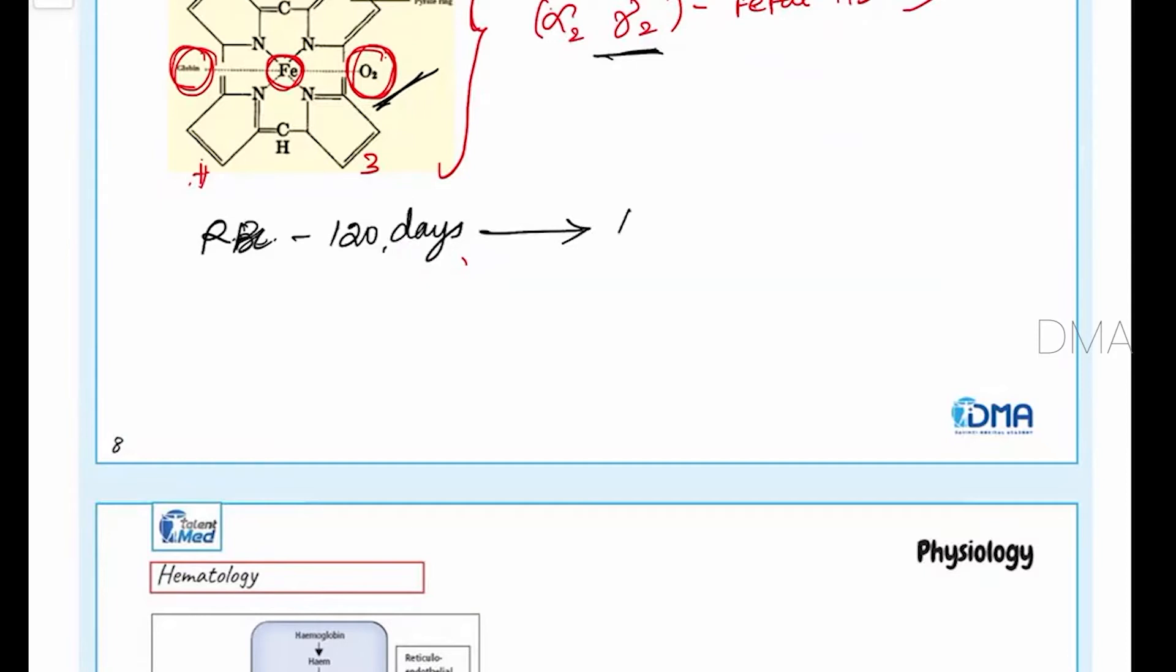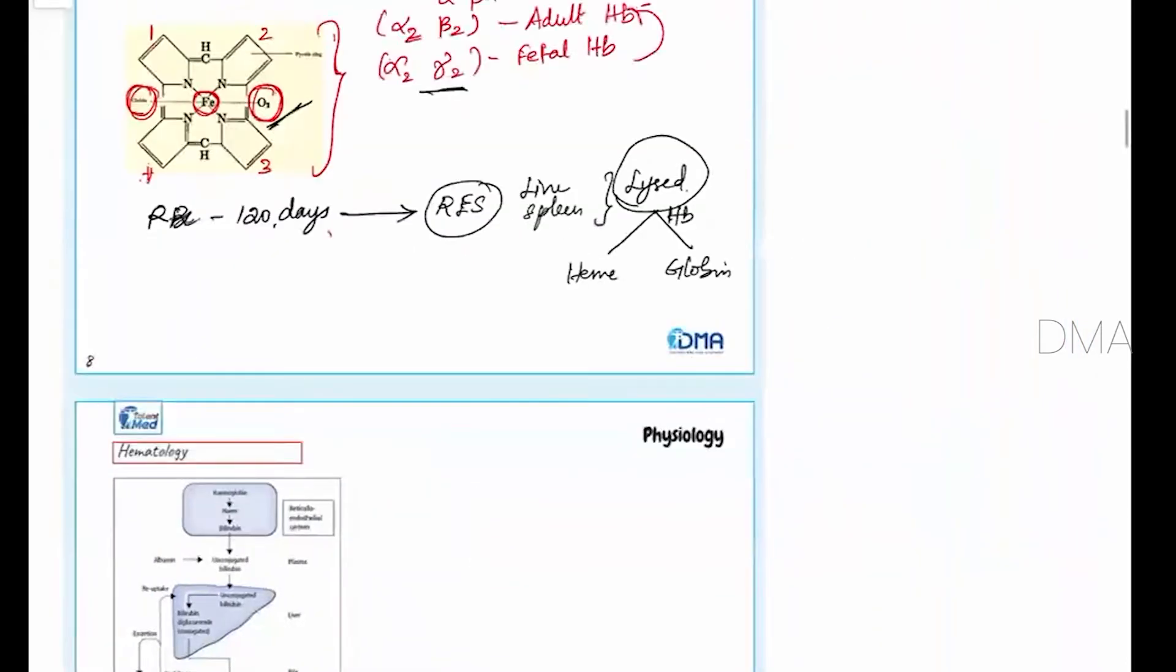So after 120 days, these red blood cells will go to the reticuloendothelial system, the liver and the spleen, and there it will be lysed. Once when the RBC is lysed, it separates the hemoglobin into heme and globin. So now what happens after this?